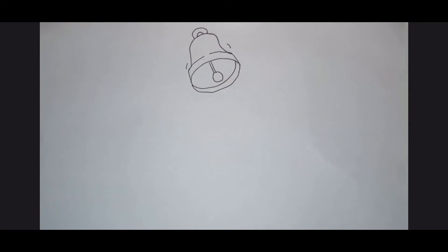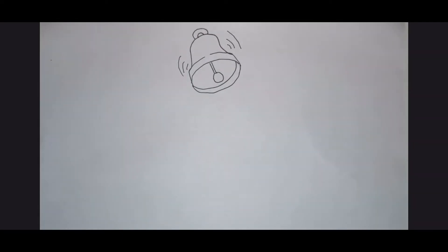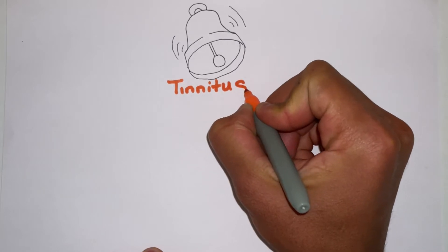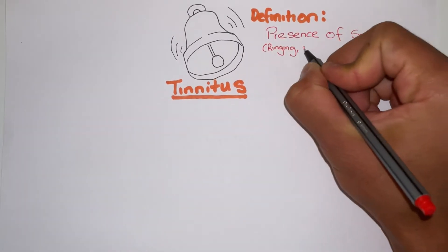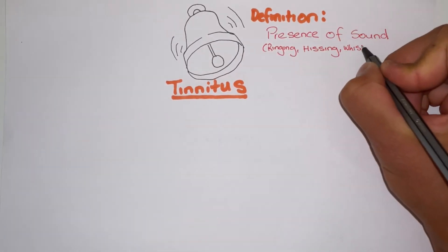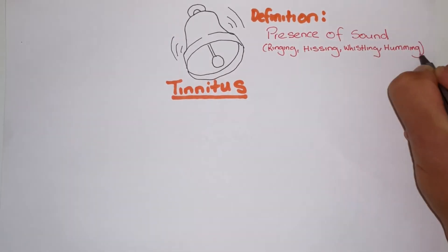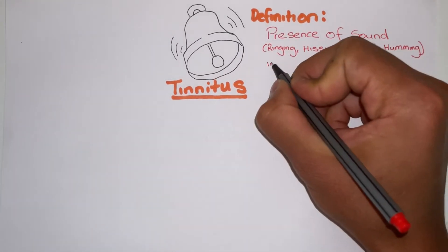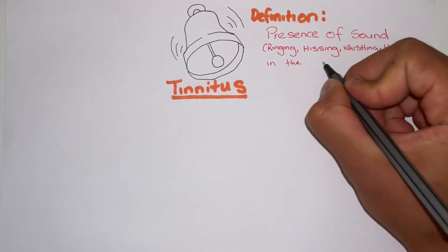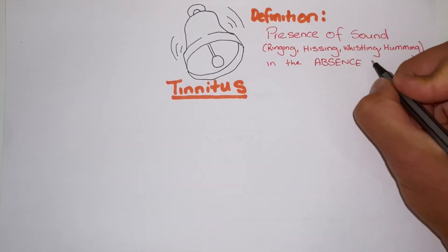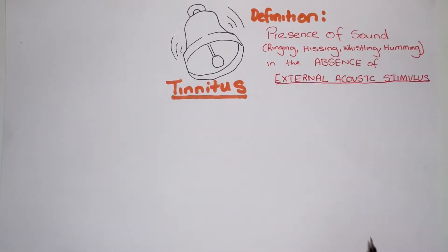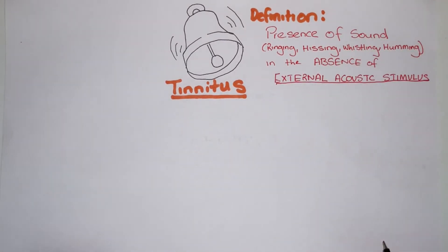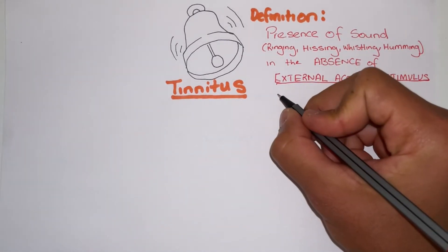This video will give you a basic understanding of the causes of tinnitus. The definition of tinnitus is the presence of sound — which can be ringing, hissing, whistling, and humming — in the absence of external acoustic stimuli.